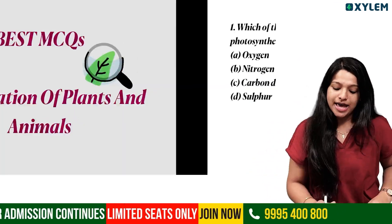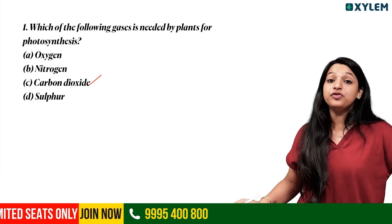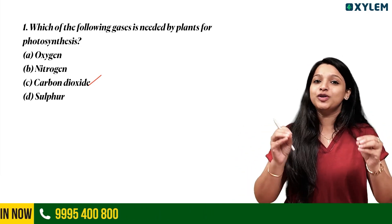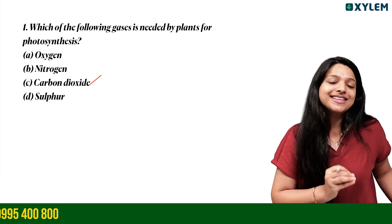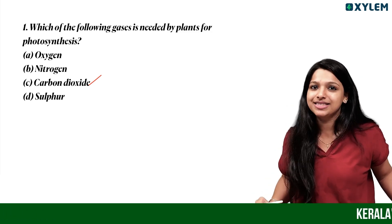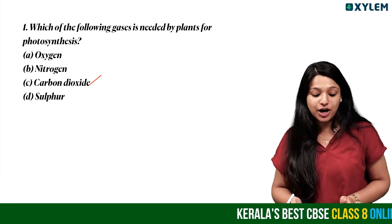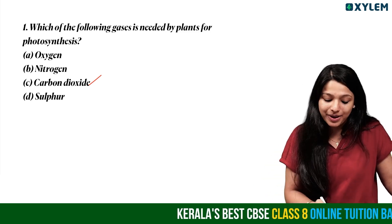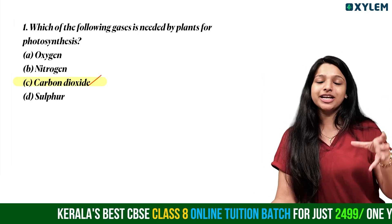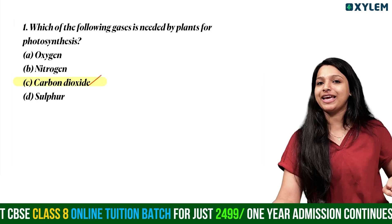First question: Which of the following gases is needed by plants for photosynthesis? The options are oxygen, nitrogen, carbon dioxide, and sulfur. The answer is carbon dioxide — plants use carbon dioxide combined with water to prepare their food.